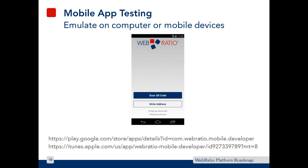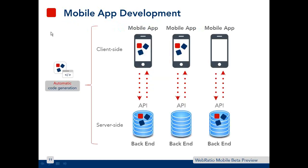Let's see how the connection between the client side and server side of the mobile application works. The client-side WebRatio-generated mobile app can communicate via APIs with a server side also made in WebRatio — so both client and server sides built in WebRatio. You can also have the client side in WebRatio communicating with a backend made externally from WebRatio.